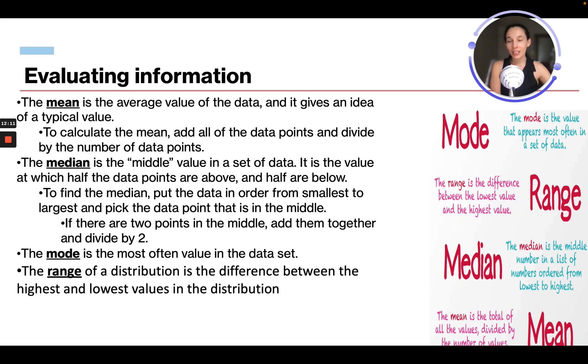If you want to find the median, this is the middle value in a set of data, the value at which half the data points are above and half are below. To find the median, put the data in order from smallest to largest and pick the center data point. If there's two points, add them together and divide by two. So say you had those 10 sets of points, you're going to list them out from smallest to largest and find the two middle points. You knock off the lowest, knock off the highest, and keep going in. If you have 10 points, you're going to have two middle points. Add them together and divide by two, and that will be your median.